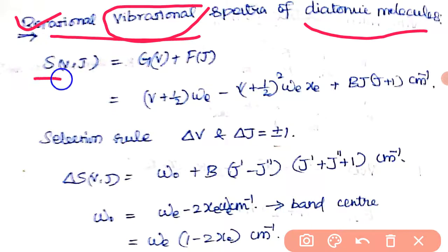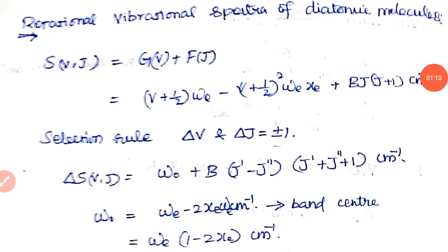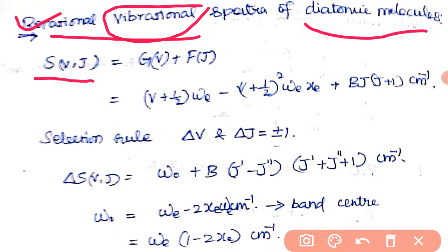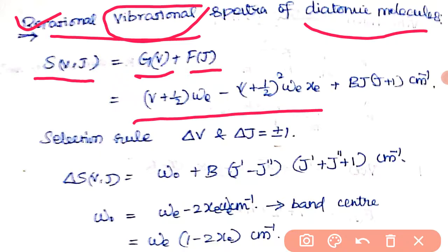S(V, J) — where V represents the vibrational level and J represents the rotational level. We will discuss the vibrational spectroscopic term, which includes the rotational levels and the transitions involved. The spectroscopic term for the anharmonic oscillator is: (V + 1/2)ωₑ − (V + 1/2)² ωₑxₑ. This is the vibrational level spectroscopic term.